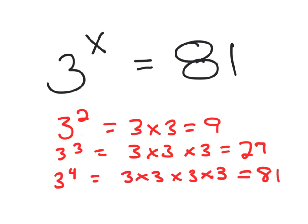So I'm going to start with 3 squared, which is 3 times 3, which equals 9. Then I did 3 to the third, 3 times 3 times 3, which gave me 27.